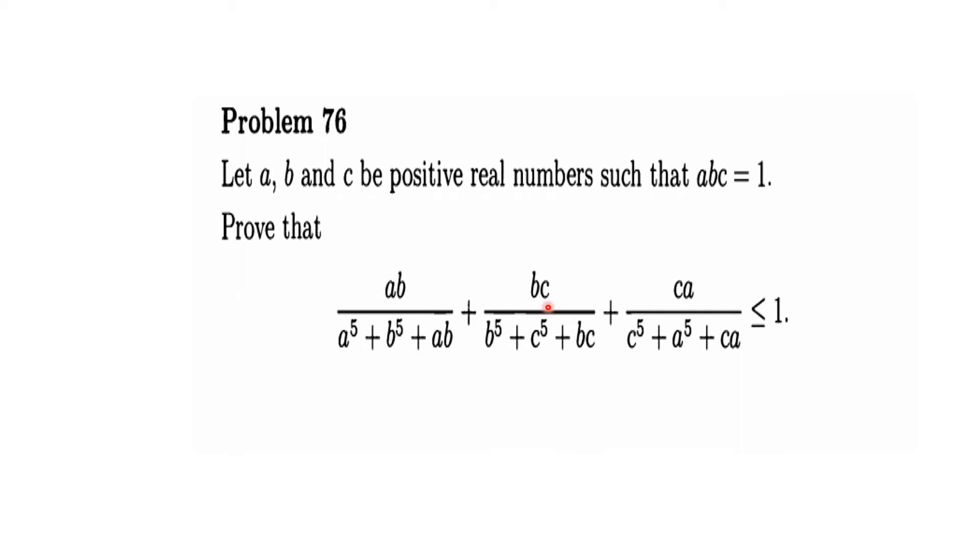...plus bc divided by b^5 + c^5 + bc, plus ca divided by c^5 + a^5 + ca, is less than or equal to 1. So we have to prove that these three fractions will sum to less than or equal to 1.